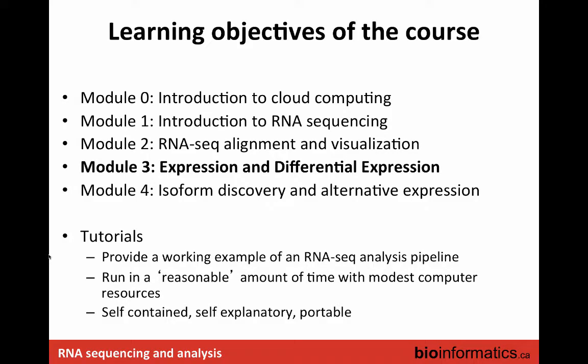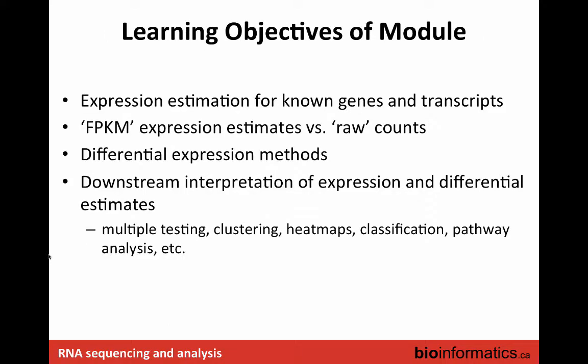This is the third out of four lectures, so you're halfway there. The main purpose of this lecture is to introduce you to the concept of expression estimation for known genes and transcripts. We're going to talk about two common metrics: FPKM-style measurements and the raw counts approach. You'll do parallel workflows in the lab covering both approaches. We'll also briefly discuss differential expression methods and downstream interpretation.